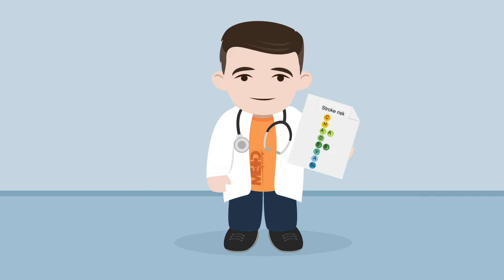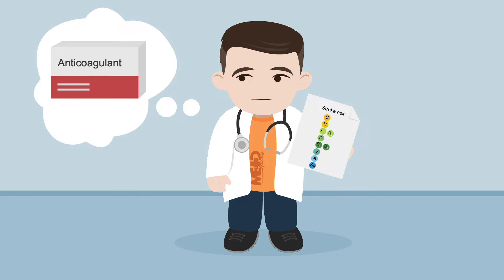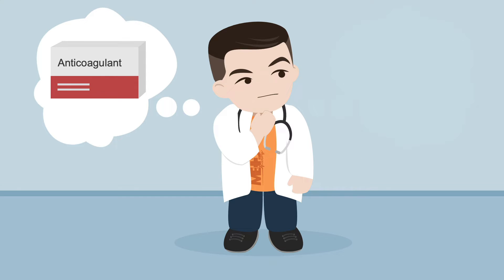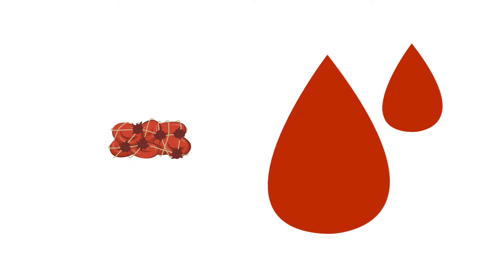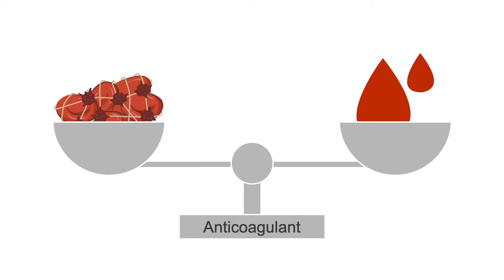In the previous MedMastery lesson, we discussed the CHADS-VASc Scoring Tool to determine a patient's risk of stroke and whether anticoagulation is right for the patient. When considering the use of anticoagulants, you may also want to assess the patient's risk of bleeding. There is no anticoagulant currently available that reduces the risk of blood clots without increasing the risk of bleeding, so anticoagulation must balance stroke prevention and bleeding risk.